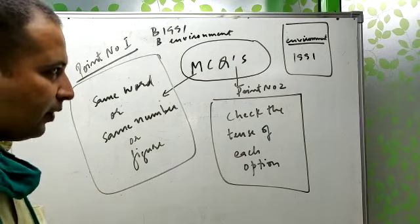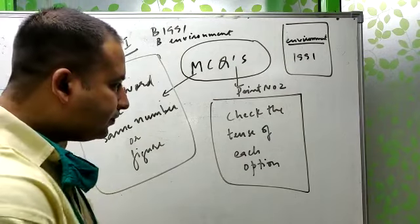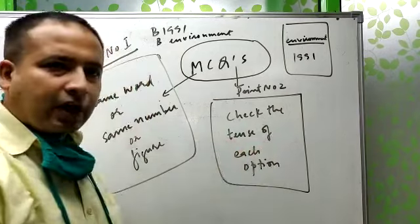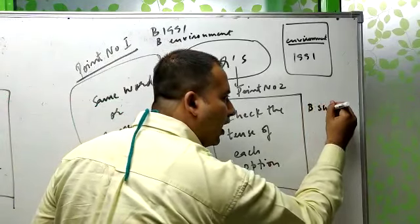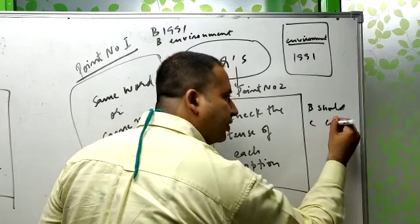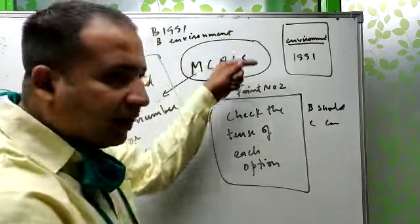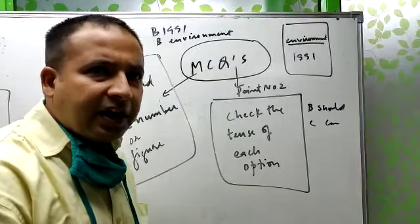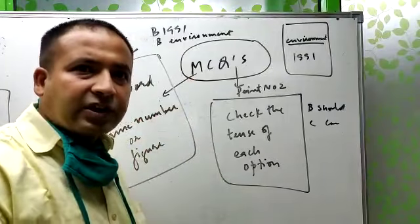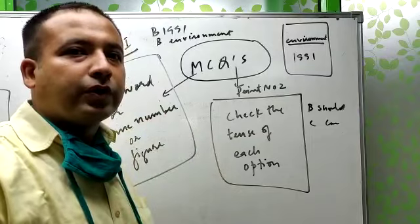Point number second to be noted when solving MCQs. Check the tense of each option. You have to check the tense of each option. Option B has 'should' used. Option C has 'can' used. Is 'can' used in the whole reading? Is 'should' used in the whole reading? What tense is the reading in? What tense is the option in? Matching these things is also very important so you don't make mistakes.